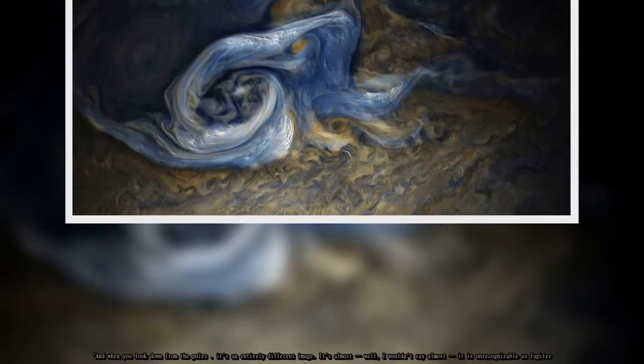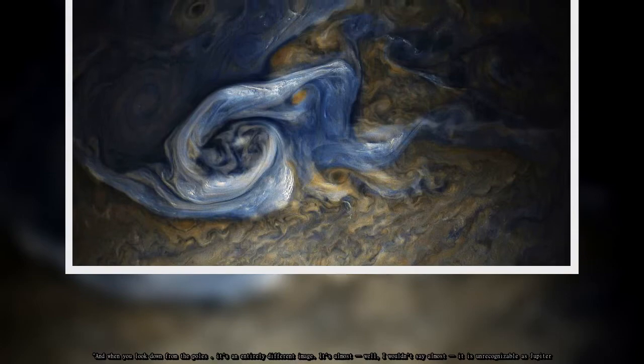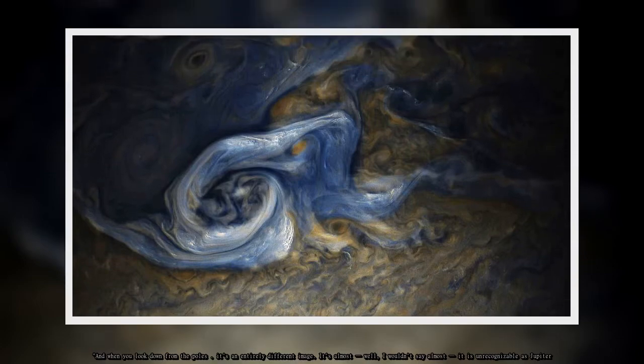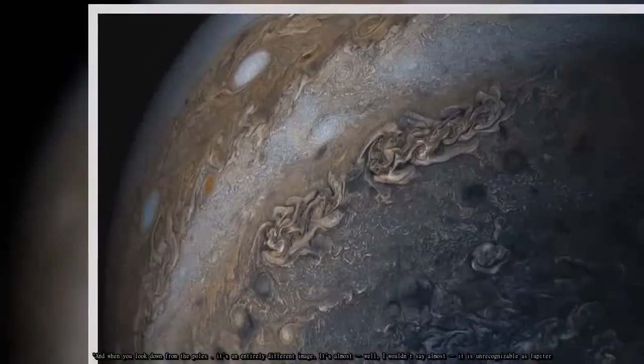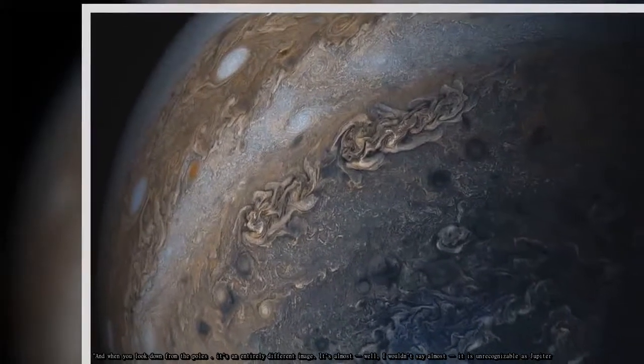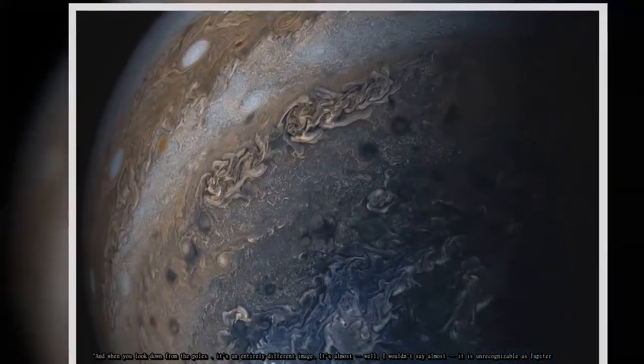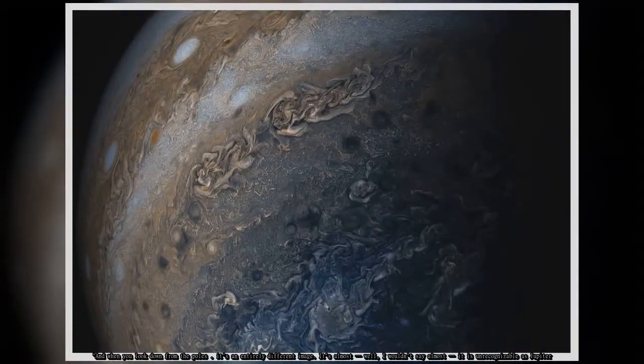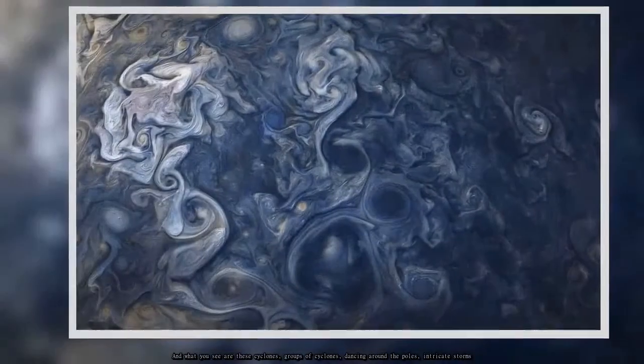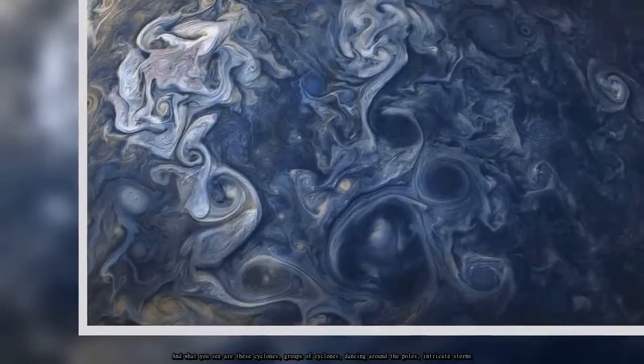And when you look down from the poles, it's an entirely different image. It's almost, well, I wouldn't say almost, it is unrecognizable as Jupiter. And what you see are these cyclones, groups of cyclones, dancing around the poles, intricate storms.